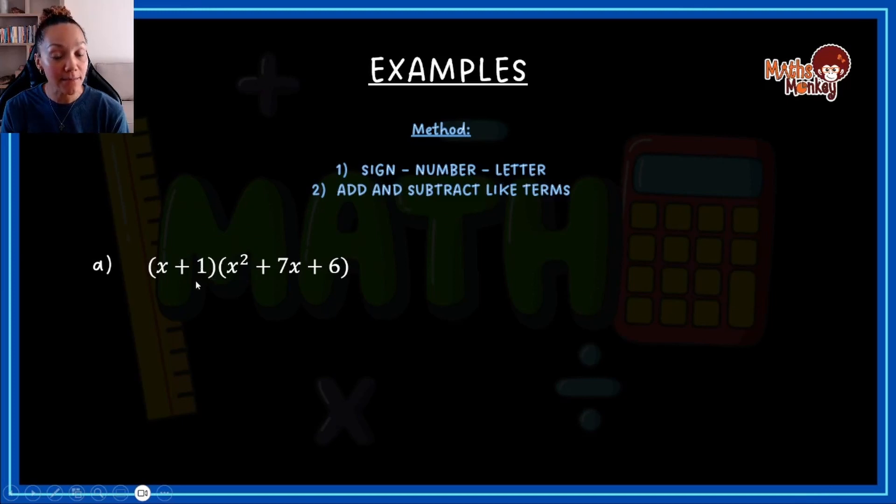Then you will take the second term and multiply it by each again, and then still applying the sign number letter, and then the answers you will then add and subtract like terms. So let me show you what I mean. So I'm going to take x, multiply it by the first term, and that gives me x to the power of 3. Then 7x times x gives me 7x squared, and then x multiplied by the 6 is 6x.